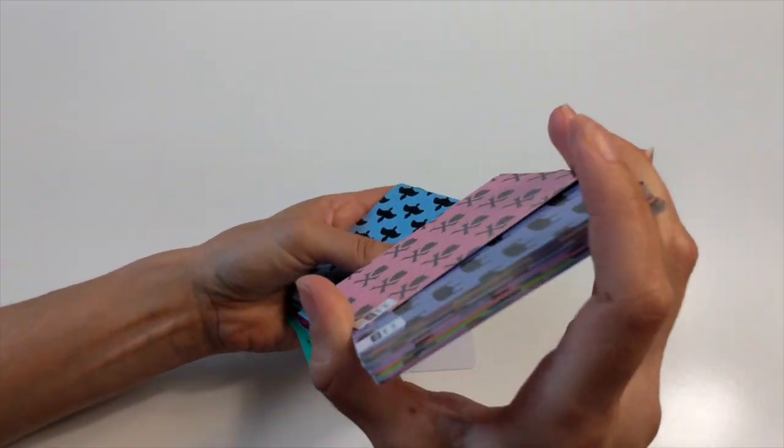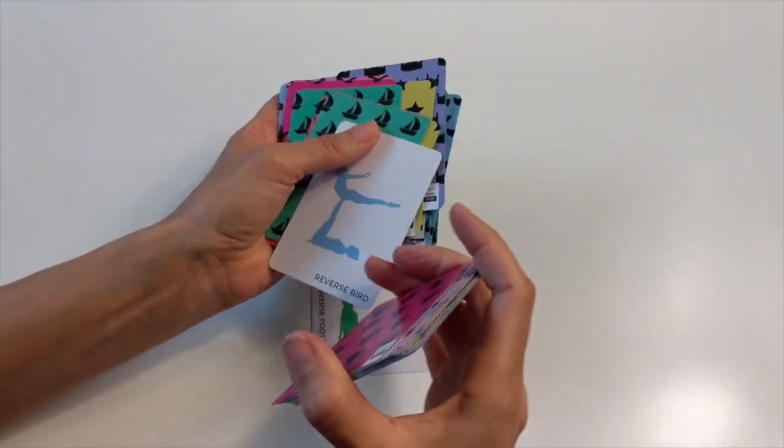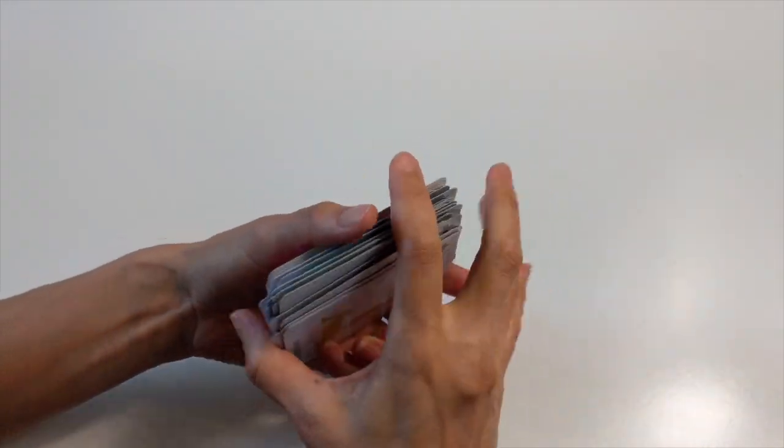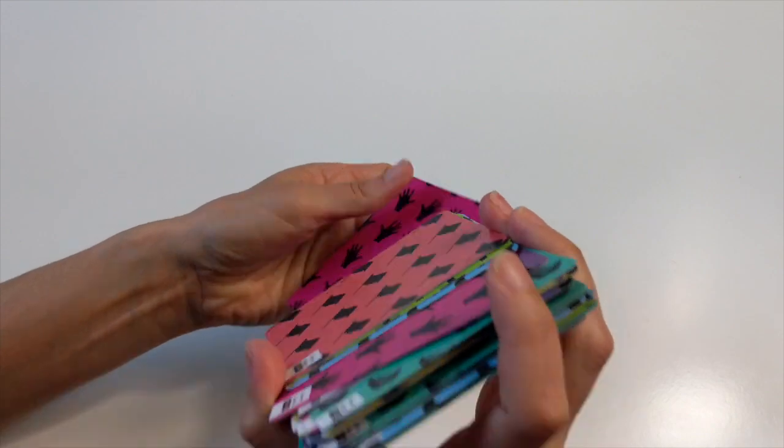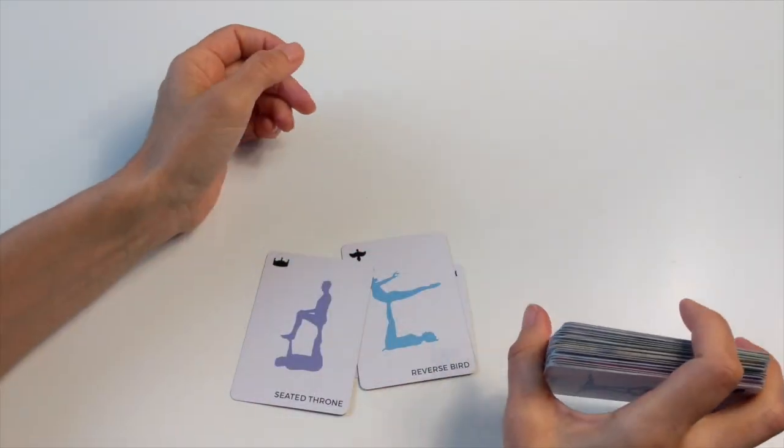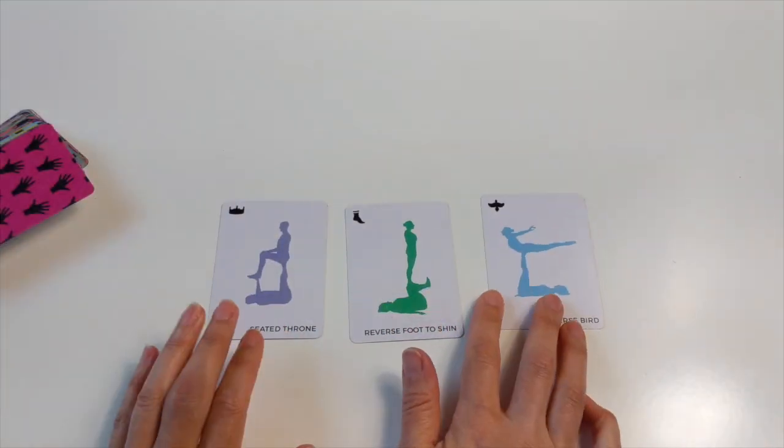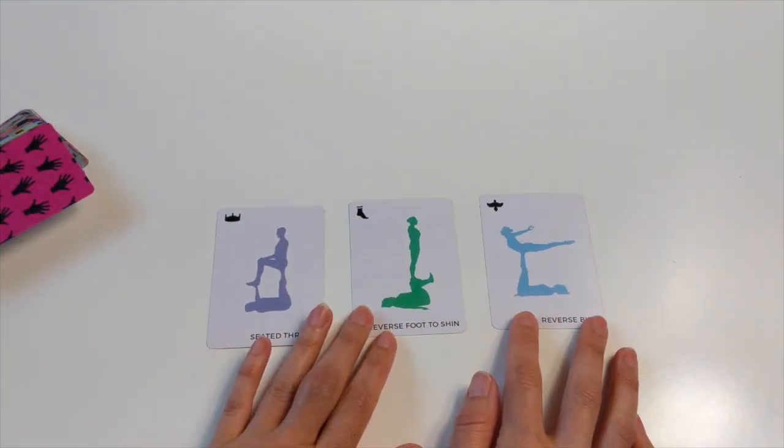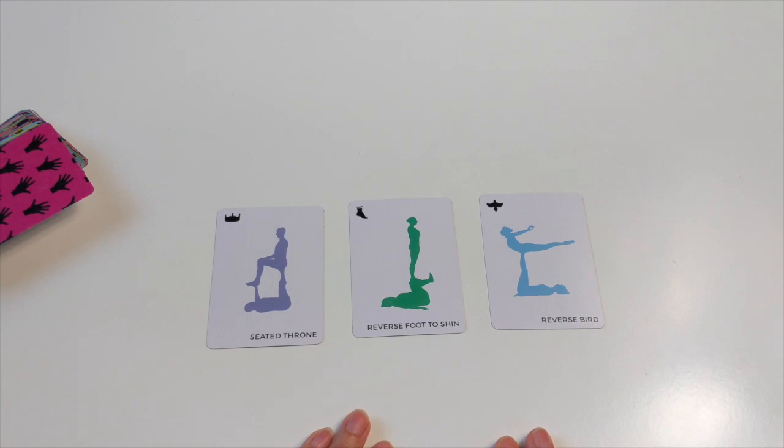Now I'm a little tired today because I spent almost all day trying to make masks which was a catastrophic failure. So let's hope that the cards have something nice and easy for me today and here they are: seated throne, reverse foot to shin, and reverse bird.